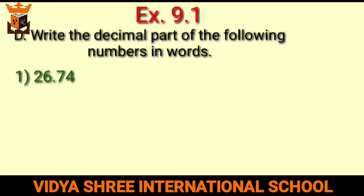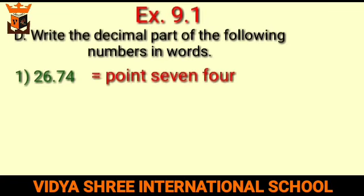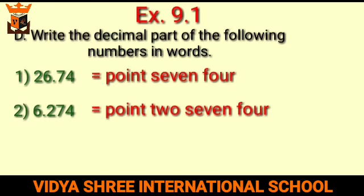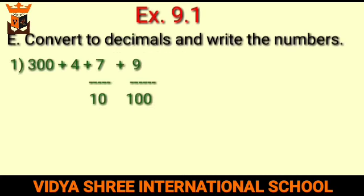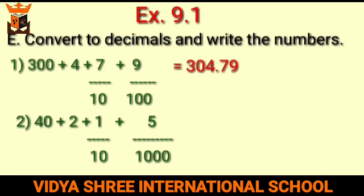Part D: write the decimal part of the following numbers in words. For 26.74, the decimal part is 0.74. For 6.274, the decimal part is 0.274. Next part: convert to decimal. For 300 + 4 + 7/10 + 9/100, the answer is 304.79. For 40 + 2 + 1/10 + 5/1000, the hundreds place is not given so we put 0 there, giving 42.105.